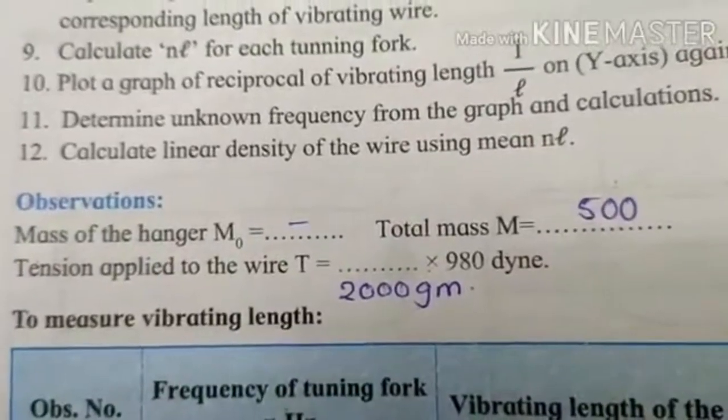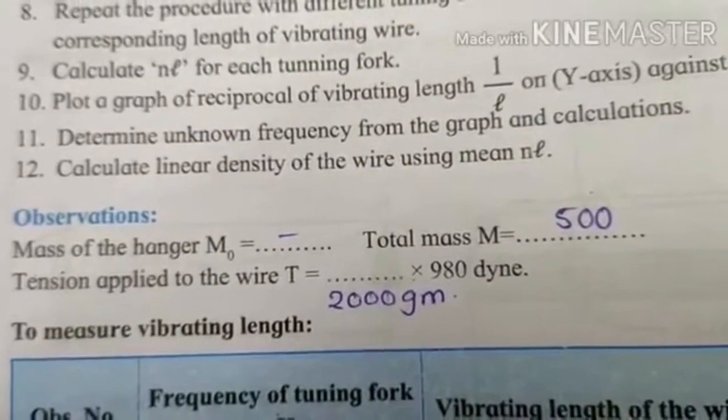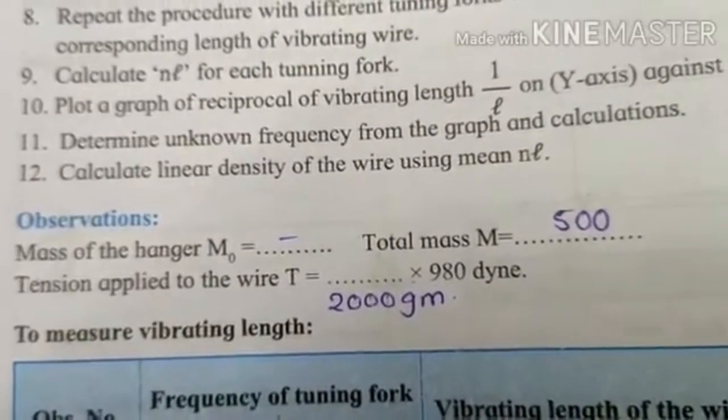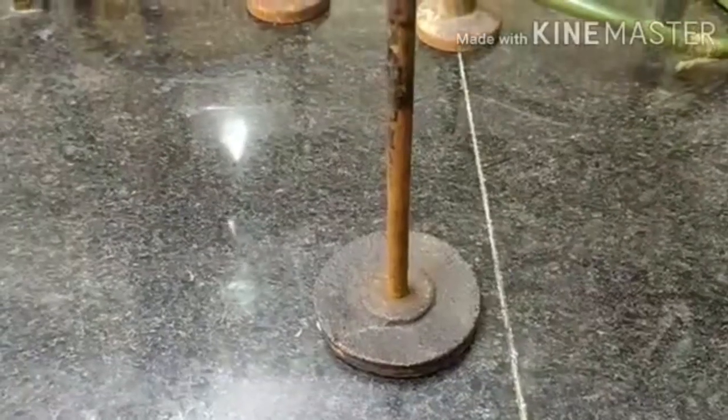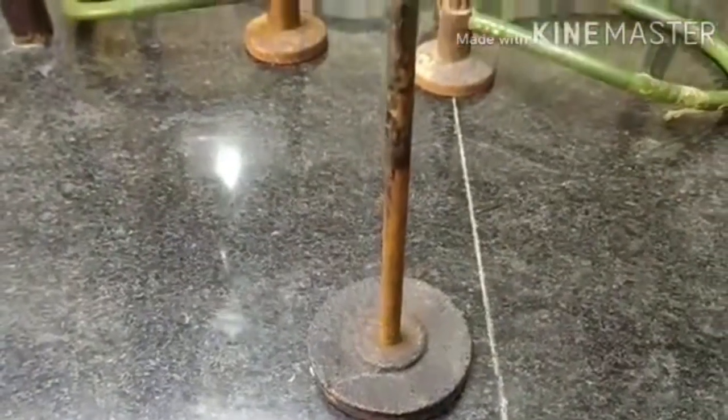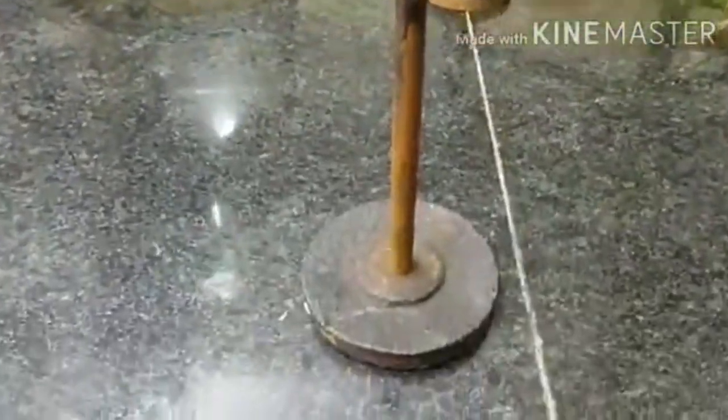Now we will move to the observation part. Here the mass of the hanger M0 or the total mass M is equal to 500. Here the mass of the hanger is 500 gram including a single disc.